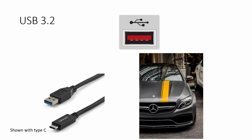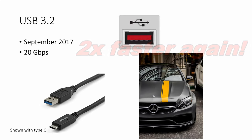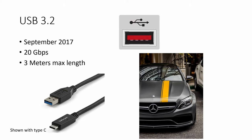Now we're going into USB 3.2, where we're really getting into some serious speeds. I'm showing this again with Type C — the cables don't look any different, but you may find a red port on the computer to identify it as 3.2. This came out around September 2017 and we're doubling speed again from 3.1's 10 gigabit, up to 20 gigabit per second. Still a 3 meter maximum length.